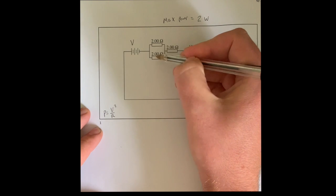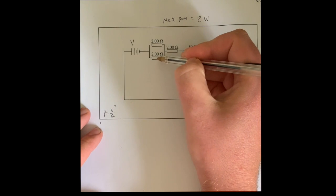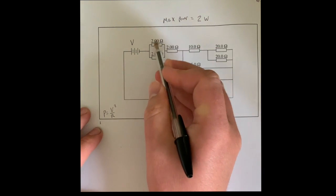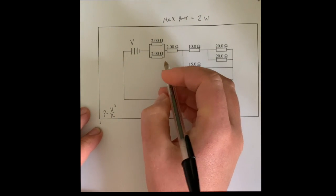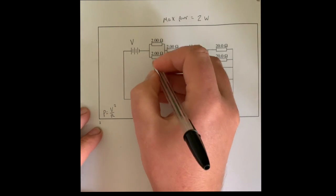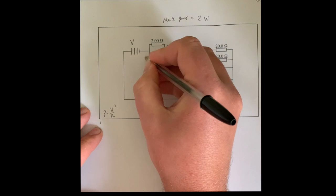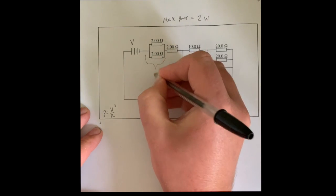So if you want to find the total resistance, these two, and you can use the formula one over RT equals one over R1 plus one over R2 to work it out, but these two will simplify to just one ohm. So I've got one ohm here. This is equivalent to one ohm.